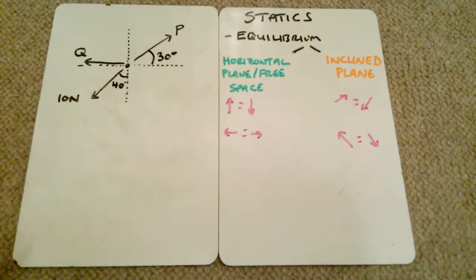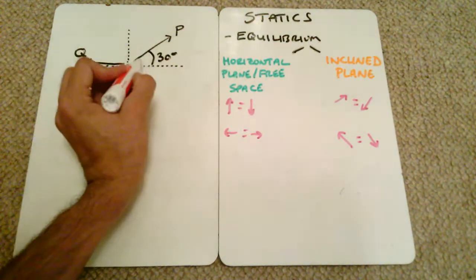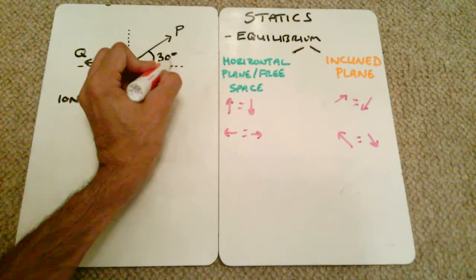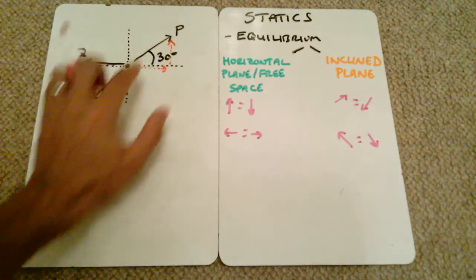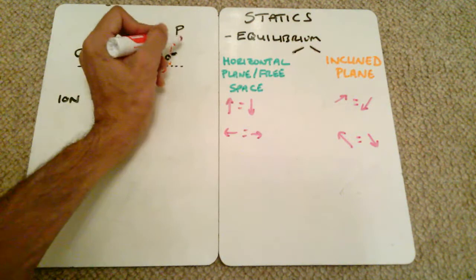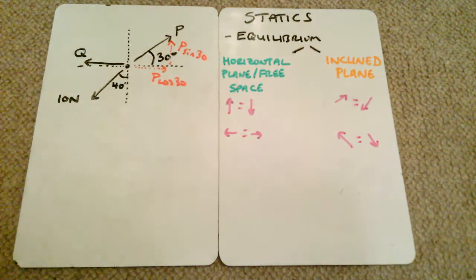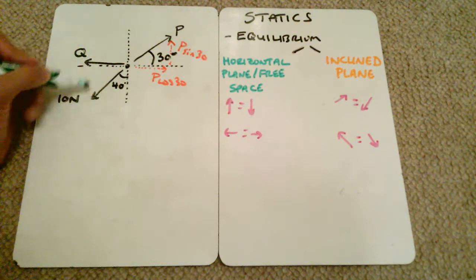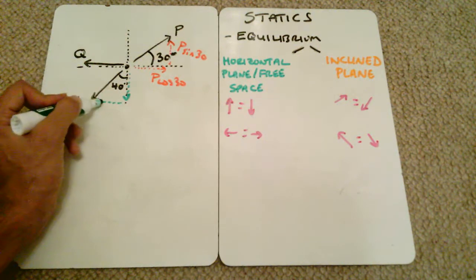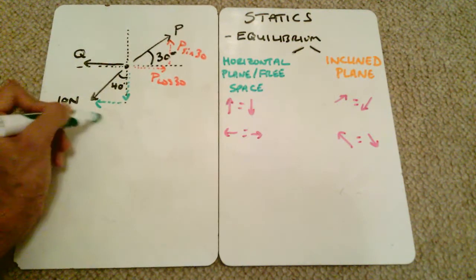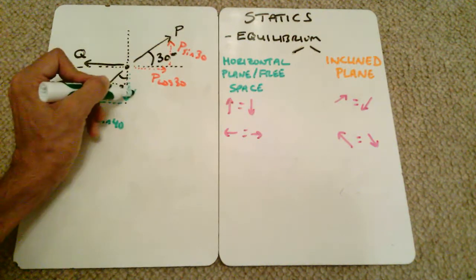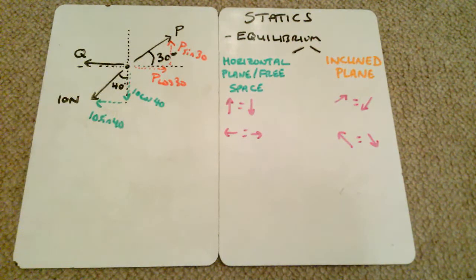The forces P and 10 newtons can be split into components. P is going up and to the right, so it splits into a horizontal force P cos 30 and a vertical force P sin 30. The 10 newton force is going down and to the left, so it splits into a downward component of 10 sin 40 (opposite) and a leftward component of 10 cos 40 (adjacent).